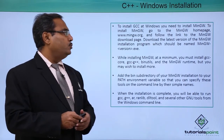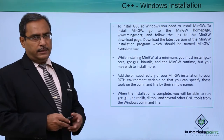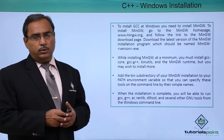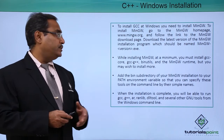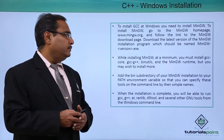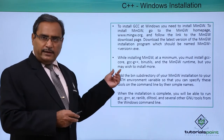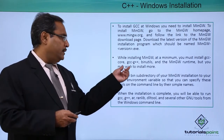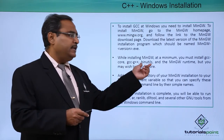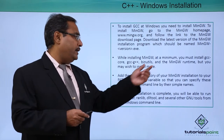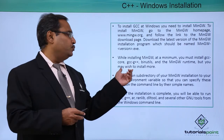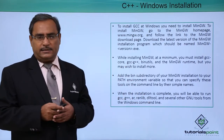To install MinGW, go to the MinGW home page — the URL is provided — and follow the link to download the respective software on your system. While installing MinGW, at a minimum you must install the core package, GCC, G++, the respective packages, binutils, and the MinGW runtime.